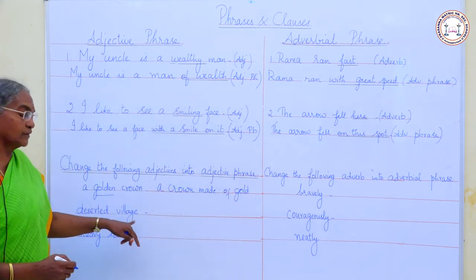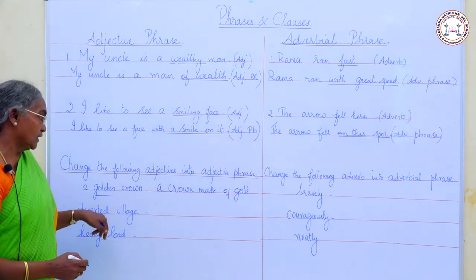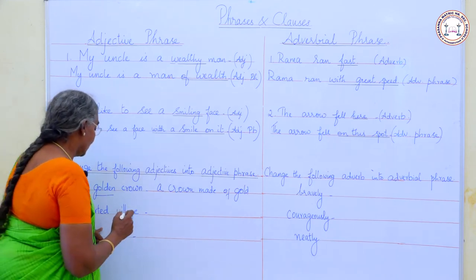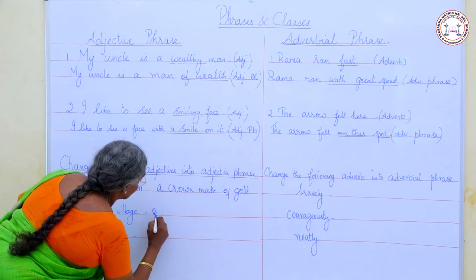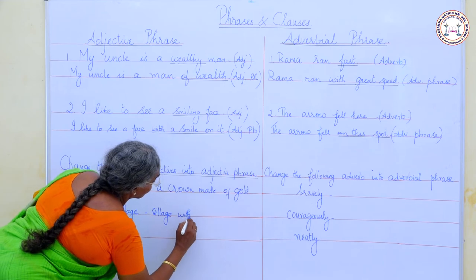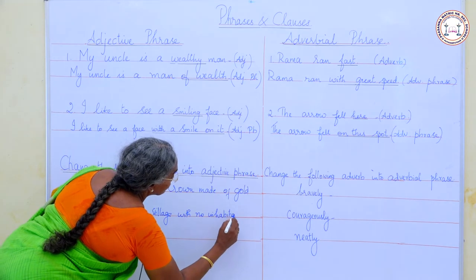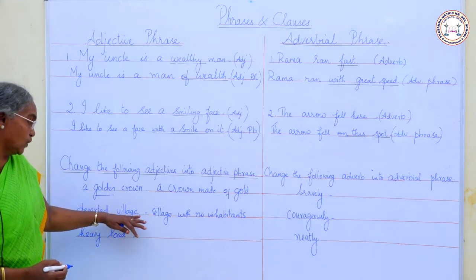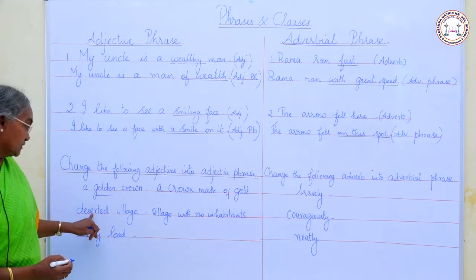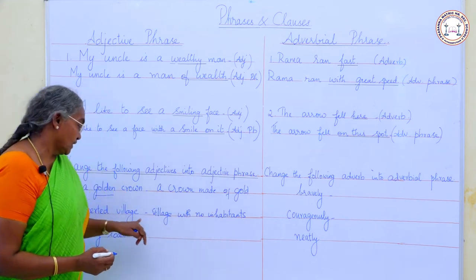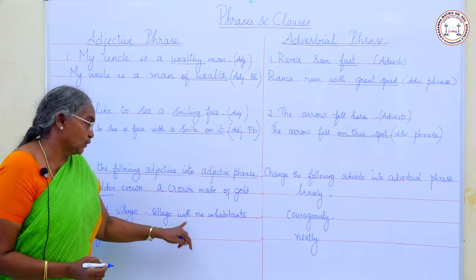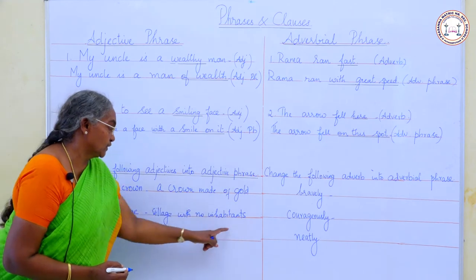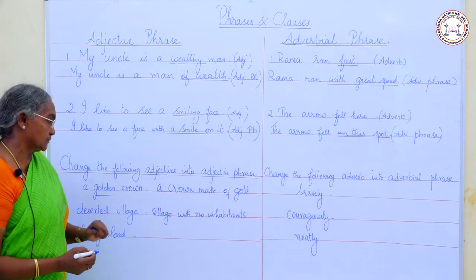Next one: 'Deserted village.' 'Deserted' is the adjective. Replace this adjective with an adjective phrase. 'Village with no inhabitants' or 'village with no people.' Here, 'deserted' is a single word describing the noun 'village' — so it is an adjective. This adjective is changed into the adjective phrase 'with no inhabitants,' which is a group of words describing the village.